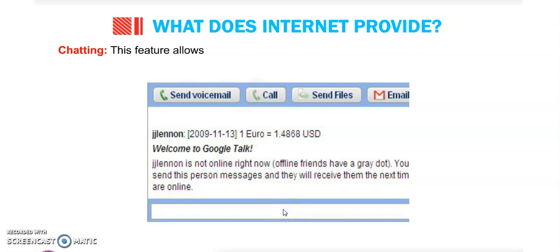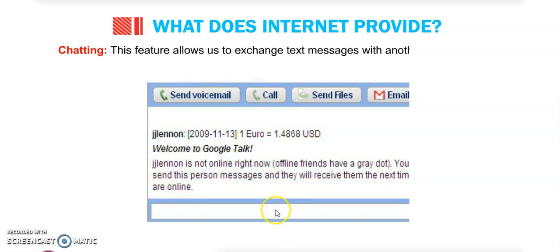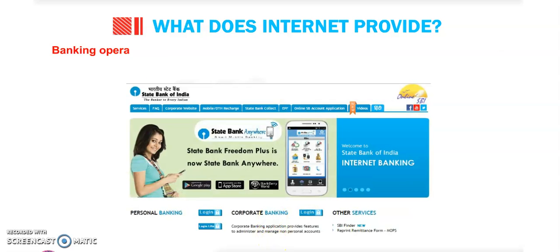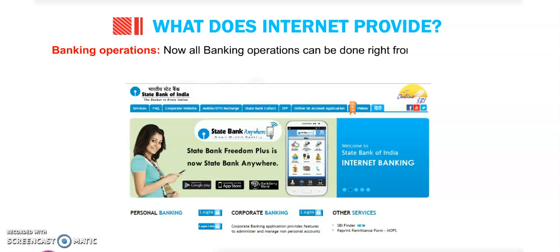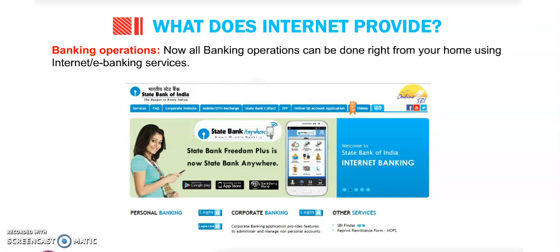Next is chatting, which is a very popular feature. This feature allows us to exchange text messages with another person on the internet, like on WhatsApp. Nowadays, banking operations: all banking operations can be done right from your home using e-banking services.